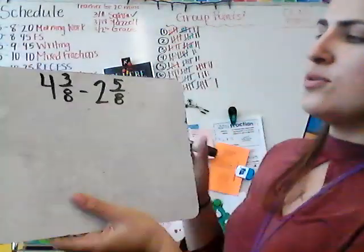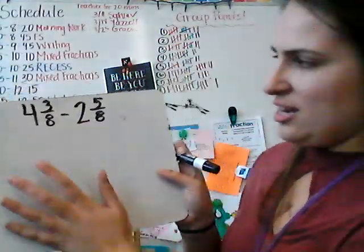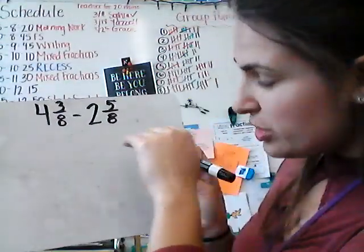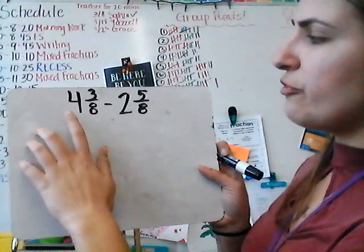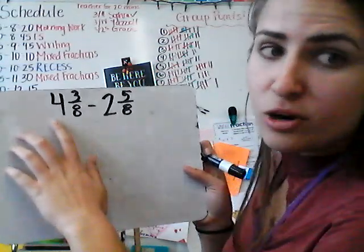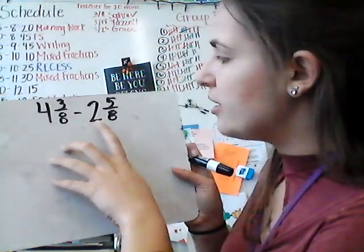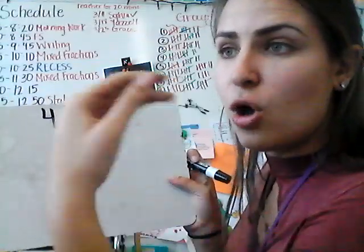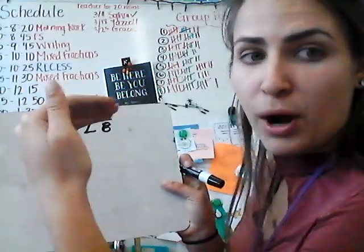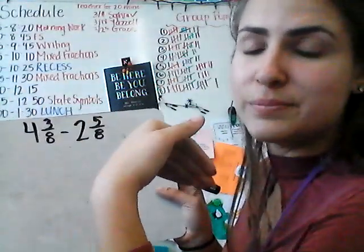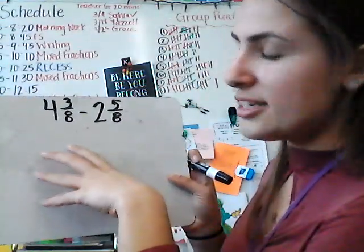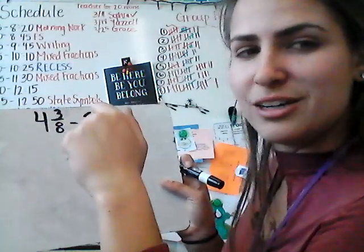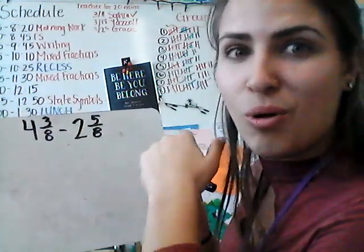So we are going to use addition to solve this problem. 4 and 3 eighths is our whole, and 2 and 5 eighths is our part. Because we know in subtraction, it's whole minus part equals part. Addition, however, is part plus part equals the whole.